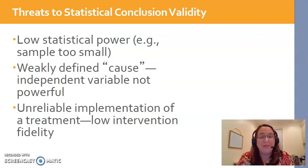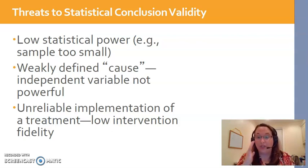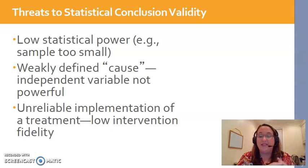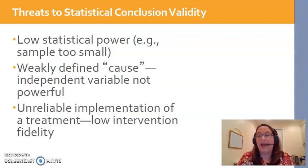However, that might not actually be true. There are errors that sometimes happen, and the reason it happens is because we did not have enough people in our study — our sample size was too small. With statistical conclusion validity, we can't be 100% sure that our intervention really didn't work. The only way we can try to prevent statistical conclusion validity issues is by having a big enough sample.